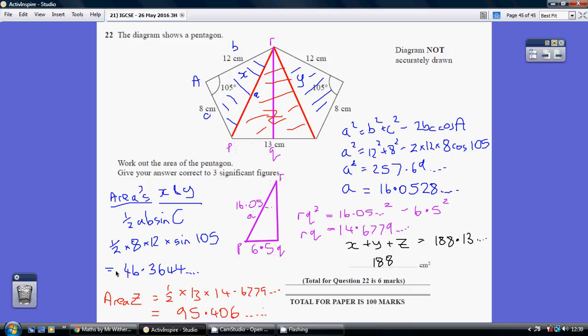Both of my blue triangles are 46.3644. So adding two of these and one of these, I get 188.13, which is 188 to 3 sig figs.